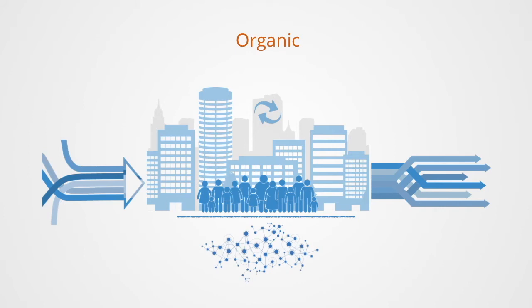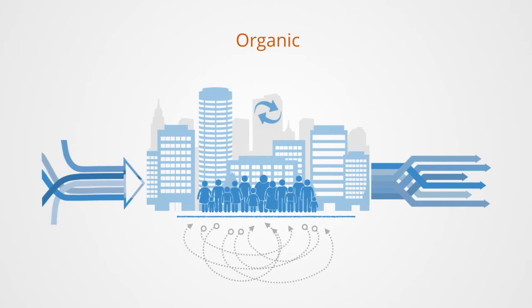The organic solidarity found in modern sociocultural systems is a form of structure based upon the dependencies different individuals have upon each other in more advanced societies. Although individuals perform different tasks and often have different values and interests, the order and very solidarity of society depends on their reliance on each other to perform their specific tasks. Organic here is referring to the interdependence of the component parts. Thus social solidarity is maintained in more complex societies through the interdependence of its component parts.